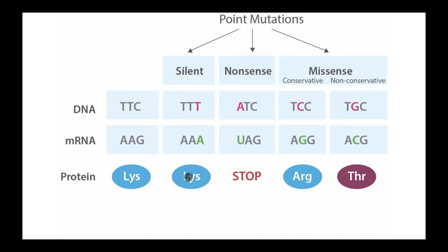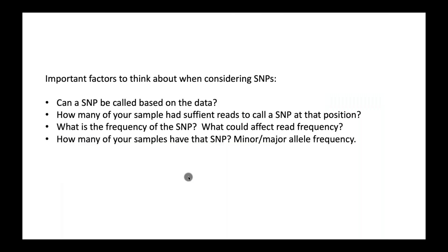Non-coding mutations are not represented in codons for amino acids — many people ignore these, but they can be quite interesting, especially if they occur in regulatory elements. For instance, if they're upstream of a gene in a transcription factor binding site, a mutation could prevent binding, which could have significant downstream effects. There are a few things to think about when considering SNPs, and these are things we incorporate in our searches.